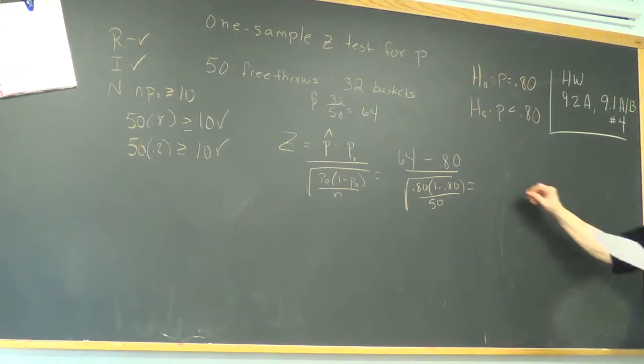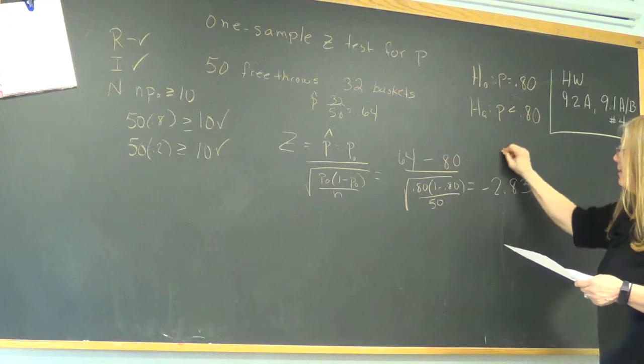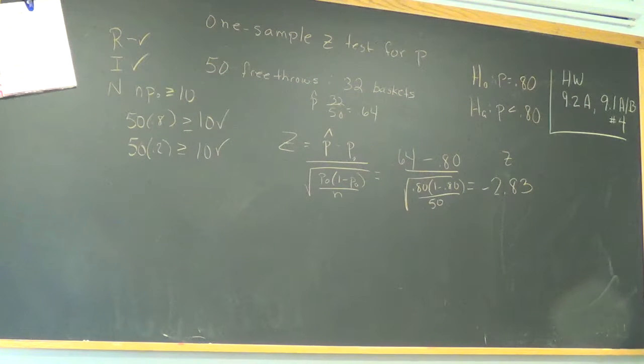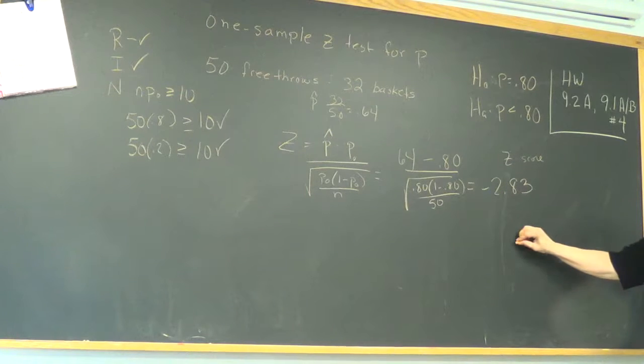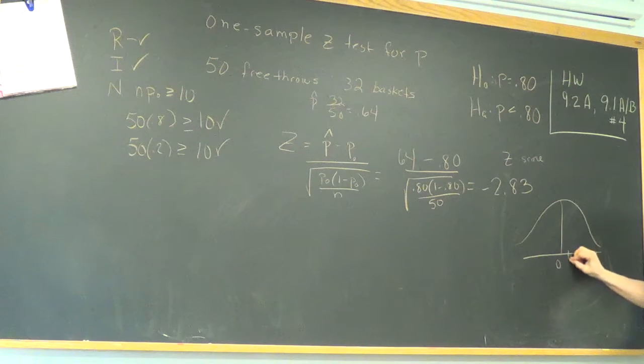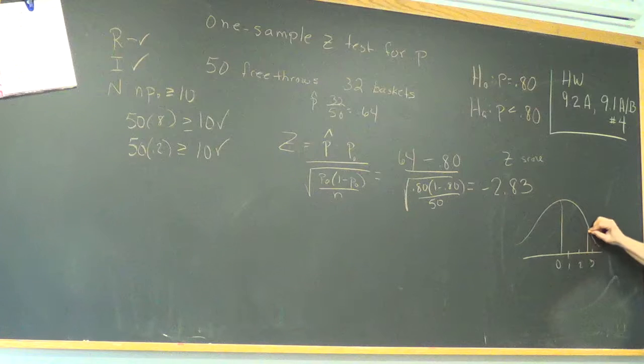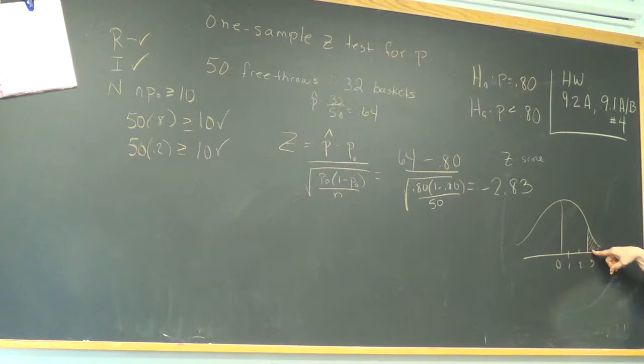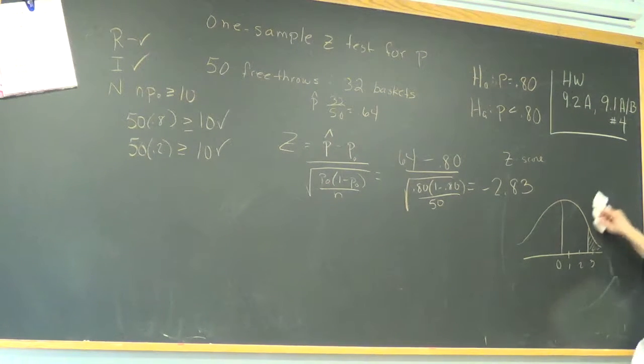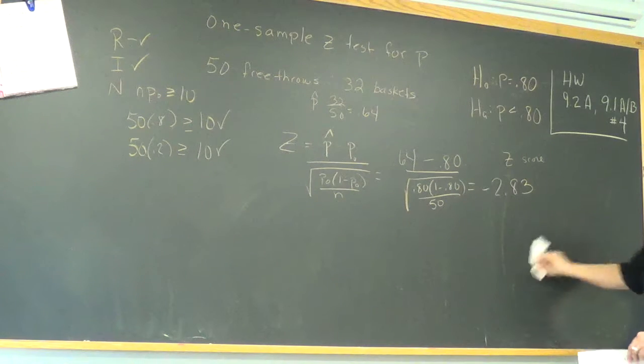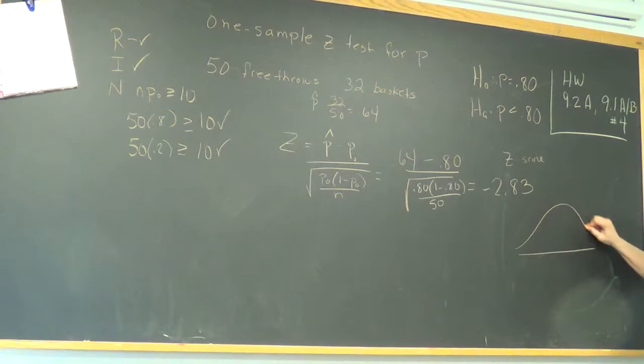All right. I got negative 2.83 when I put that in the calculator. I got negative 2.82, but we'll take what I got. And that is a Z-score. So I'd like you to sketch your Z-score so you can see what's happening. 0, 1, 2, 3. We're way down here in the normal curve toward the tail. So like we're wondering what that area is. And that's going to be the P-value. I went the wrong way. Sorry.